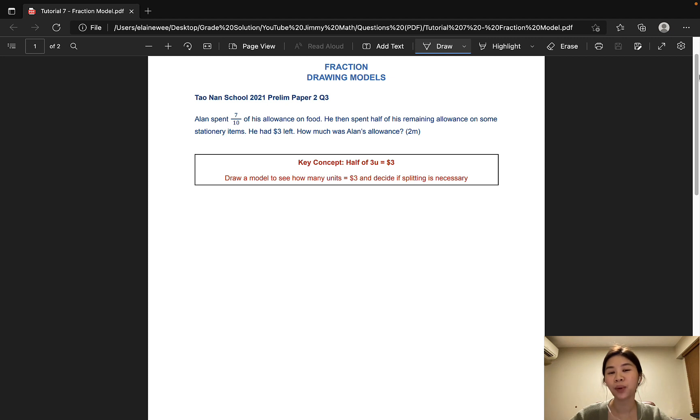Today, we'll be looking at two questions taken from past year prelim papers. The first question is taken from Taunan School and it is worth two marks. Alan spent seven-tenths of his allowance on food. He then spent half of his remaining allowance on some stationary items. He had three dollars left. How much was Alan's allowance?